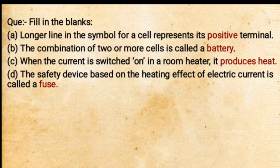The next one: the safety device based on the heating effect of electric current — the correct answer is fuse. Fuse works at different current limits; if the current value exceeds the rated limit — for example, if the fuse is rated 5 amperes but 7 amperes tries to pass — the fuse wire will melt.